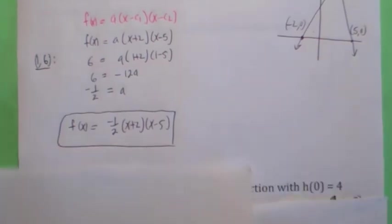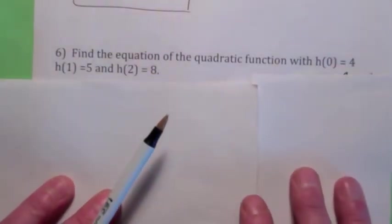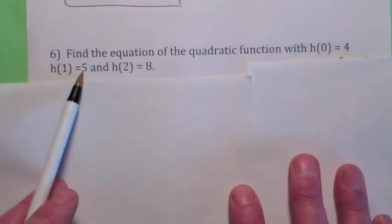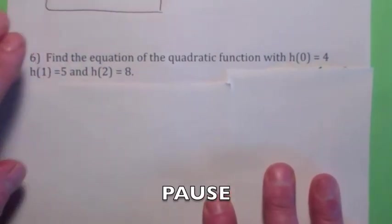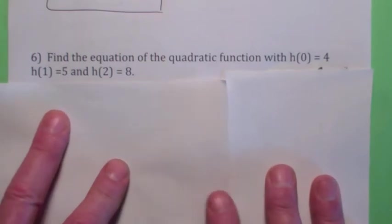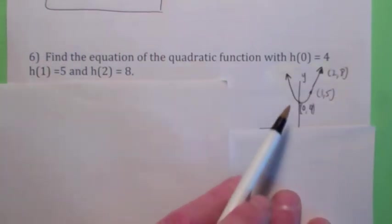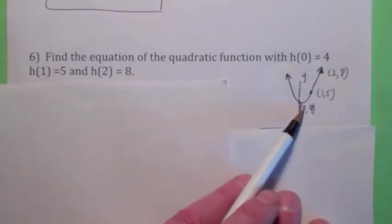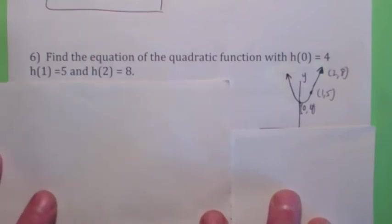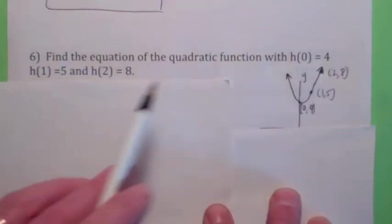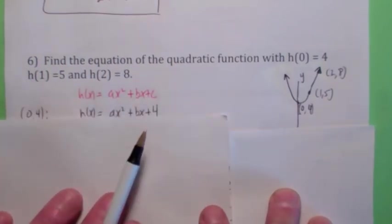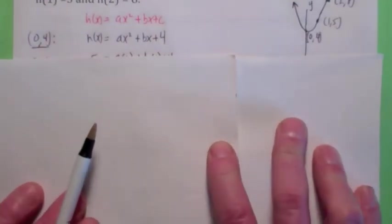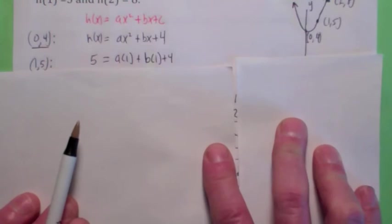Try this one: find the equation of the quadratic function where h(0) = 4, h(1) = 5, and h(2) = 8. It might be nice to draw a picture. Don't assume any of these points is the vertex — don't assume (0, 4) is the vertex; we don't know that. But we do know it's the y-intercept, so use the standard form f(x) = ax² + bx + c with c = 4. Then get two equations in a and b using the other two points.